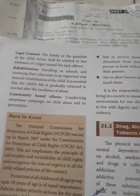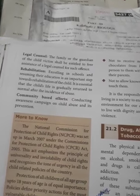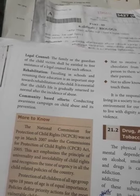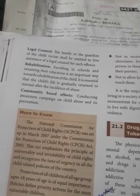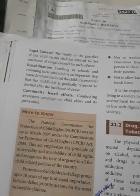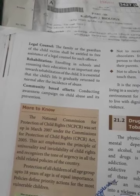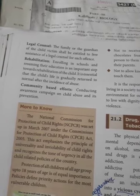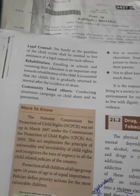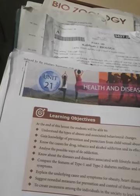It is essential that the child's life is gradually returned to normal life after the incidence of abuse. The last point is community-based efforts — conducting awareness campaigns on child abuse and its prevention. These are the different approaches to be made for the protection of the abused child.